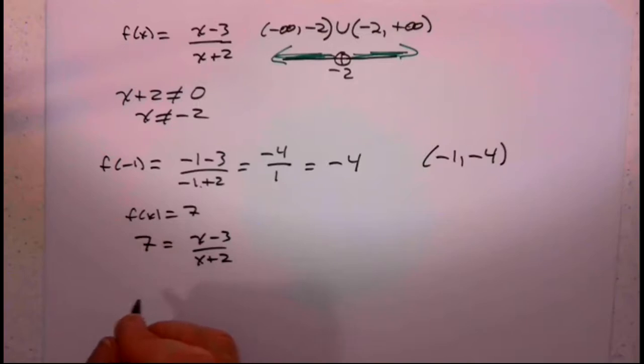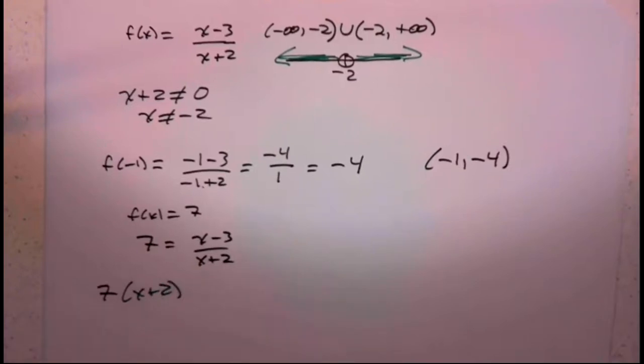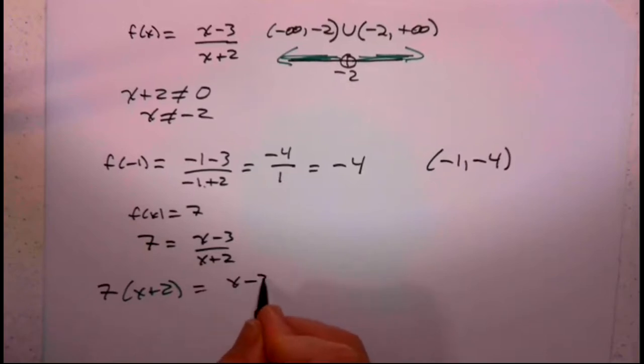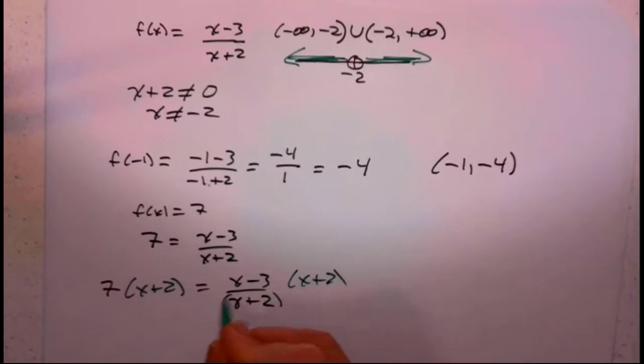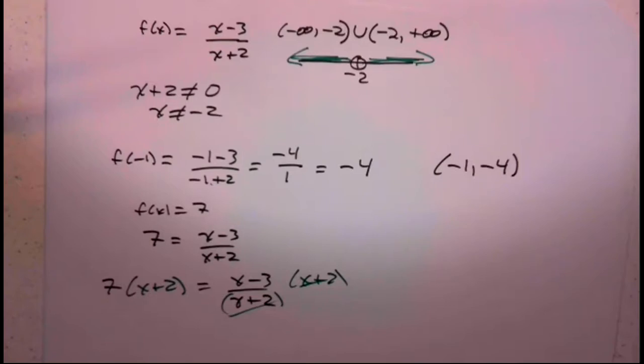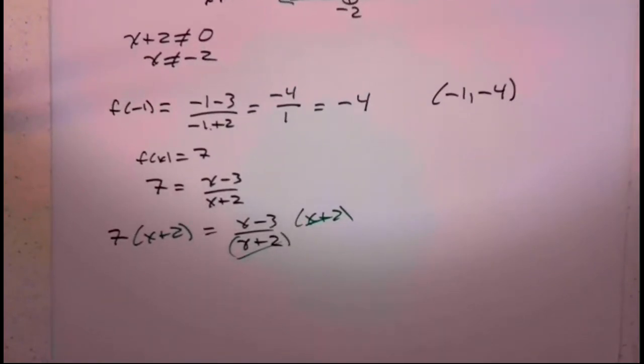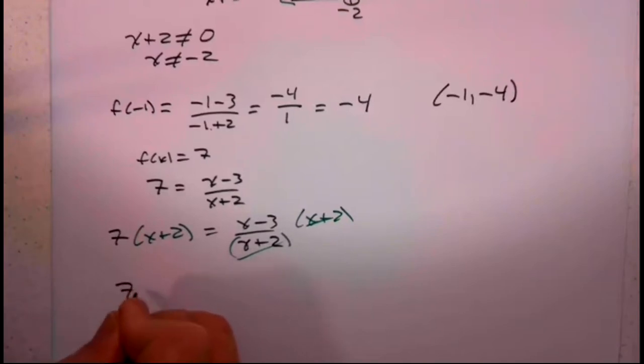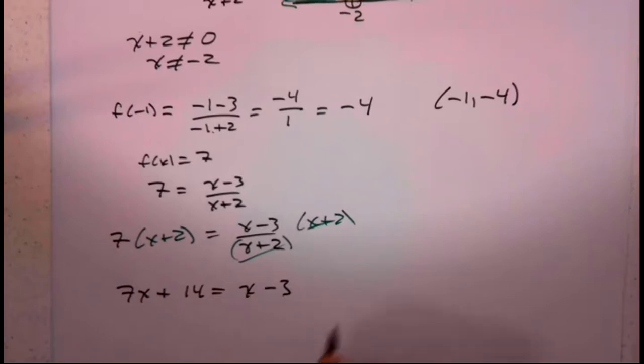So we're going to go ahead and multiply both sides by x plus 2. Multiply the left side by x plus 2. Multiply the right side by x plus 2. And you'll notice on the right side, the x plus 2 go away. And now we have on the left side, 7 times x plus 2 or 7x plus 14 equals x minus 3.